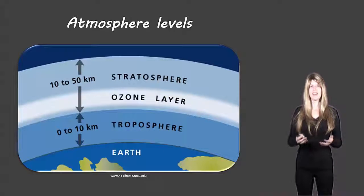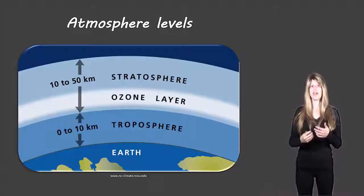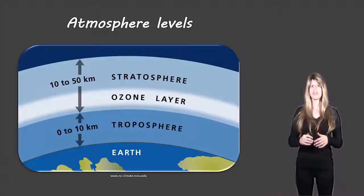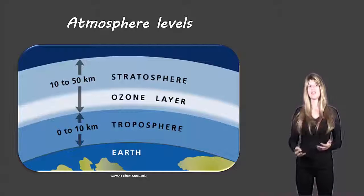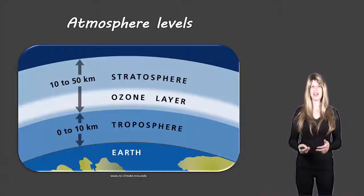This is a protective layer, it helps us on earth and it needs to be in the stratosphere for it to be considered good ozone. When that ozone comes down into the troposphere that's when we start calling it bad ozone and it can start to cause negative effects on earth.